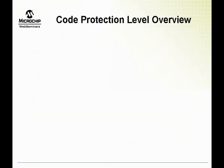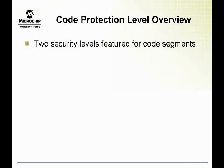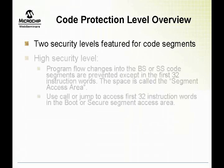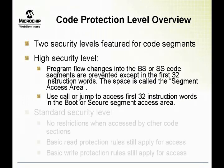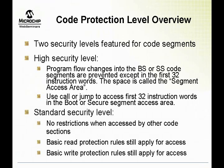We mentioned the use of segment access areas to severely limit code access into the boot or secure segments. To enable the use of the segment access area, the boot or secure segments must be configured for a high security level. When a segment is configured for high security, access to that segment from other segments by way of a branch or go-to instruction is limited to the first 32 instruction words in that segment. When a segment is configured for standard security level, the access area does not exist and code may branch anywhere into the boot or secure segment freely. However, flash read and write operation or write protection rules will continue to apply for the segment.